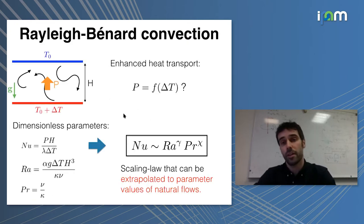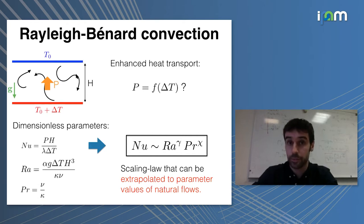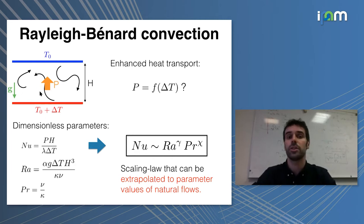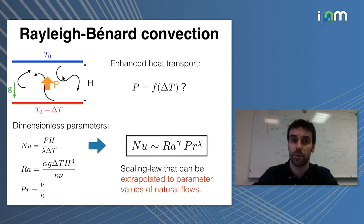When we think about thermal convection, we usually think about the standard canonical Rayleigh-Bénard convection setup — that's a layer of fluid contained between a hot bottom plate and a cool top one. That temperature difference is going to induce lighter fluid close to the bottom and heavier fluid on top, so it's an unstable situation, and what happens is that it's going to induce turbulent motion of the fluid, which is now carrying heat from the bottom plate to the cool top plate, enhancing the heat transport between these two plates as compared to the motionless situation.